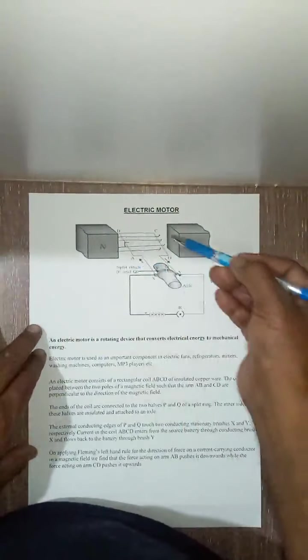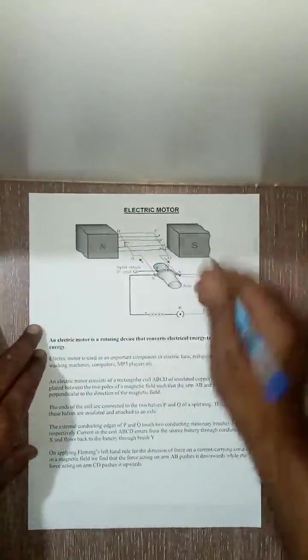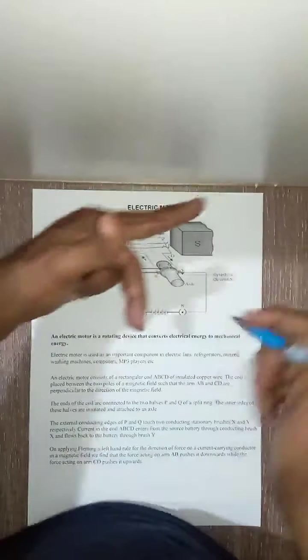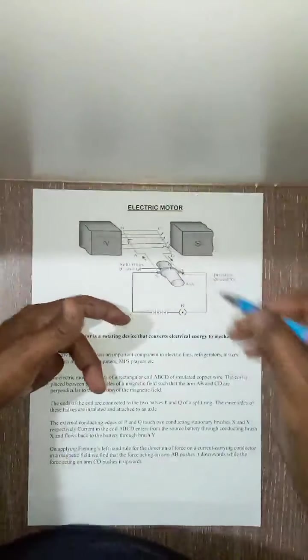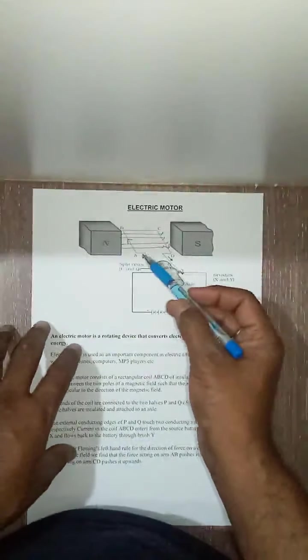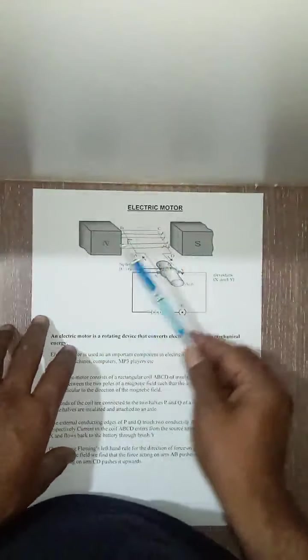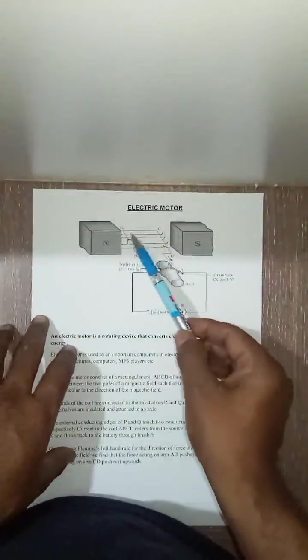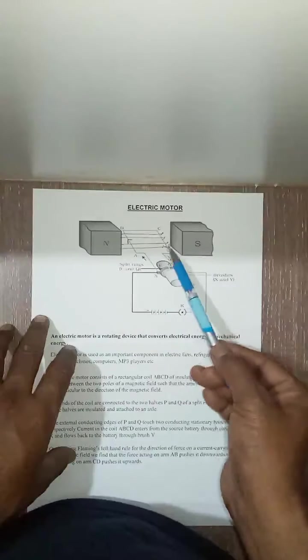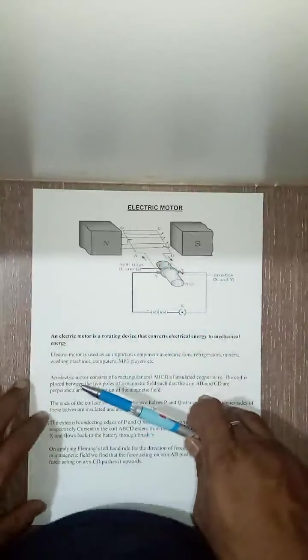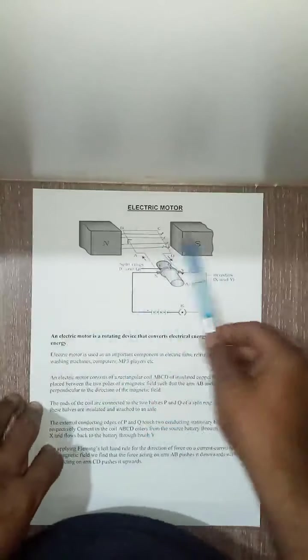Similarly for this side, current is coming. Again field line is like that but the current is coming here. So current is coming so the force will be upward direction. So by Fleming's left hand rule we have seen that this arm BA will go downward and this arm CD will come up. Hence rotation starts. This is the basic fundamental rule of electric motor.